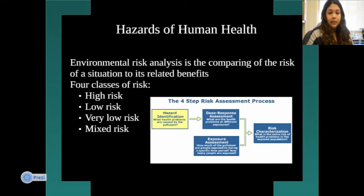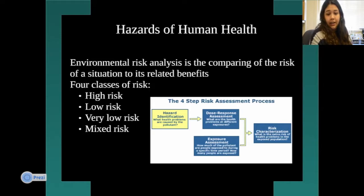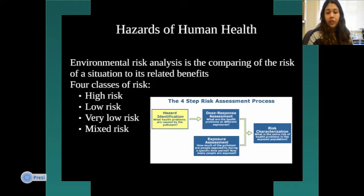Based on the risk, they compare the benefits of what you're doing, and if it's really high risk, they assess whether to go through with it. The four steps of the risk assessment process — as the picture shows — are: hazard identification, where you identify what health problems are caused by the pollutant; dose response assessment; exposure assessment; and risk characterization.